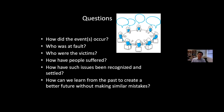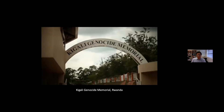As a form of co-production, scholars, officials, victims, and their family members should be invited to such heritage sites to discuss together what they mean for societies in the past, present, and future. Questions during such roundtables or workshops can include: How did these events actually happen? Who was at fault? Who were the victims? How have people suffered? How have such issues been recognized and settled? Most importantly, how can we learn from the past to create a better future without making similar mistakes? Incorporating these questions requires courage and empathy. Only such a way of co-production allows us to engage with the recognition and interpretation of crucial and hidden knowledge of the past.